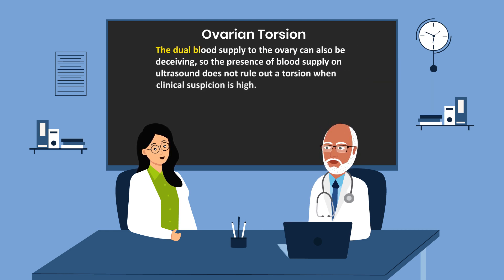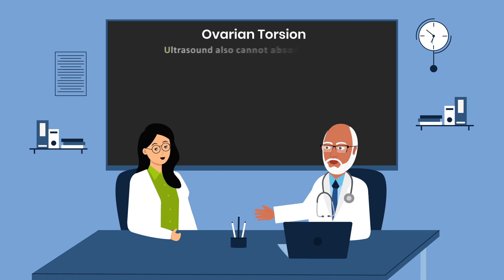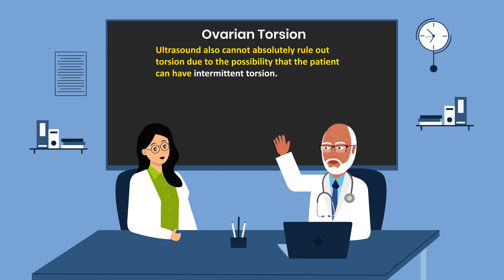The dual blood supply to the ovary can also be deceiving, so the presence of blood supply on ultrasound does not rule out torsion when clinical suspicion is high. Ultrasound cannot absolutely rule out torsion due to the possibility that the patient can have intermittent torsion.